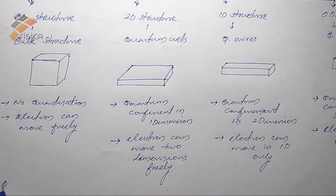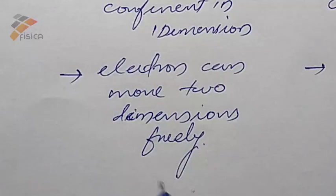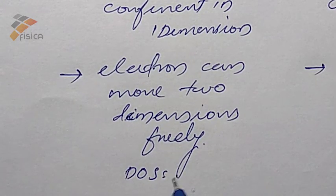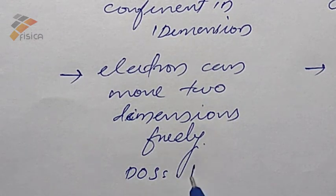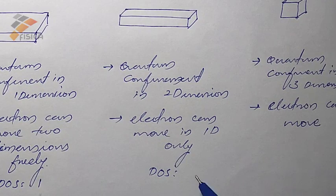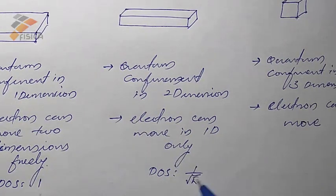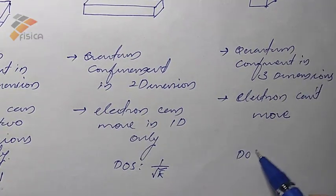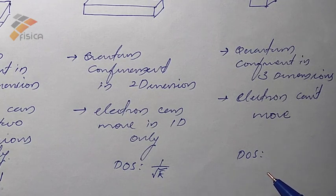The density of states of bulk structure is root E, and the density of states of quantum well is 1. The density of states of quantum wire is 1 by root E, and the density of states of quantum dot is delta of E.